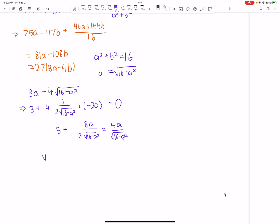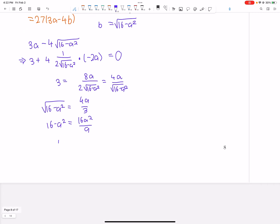So therefore we have square root of 16 minus a squared equals 4a over 3. We square both sides. We get 16 minus a squared equals 16a squared by 9. And therefore we have 16 equals 25a squared by 9. 4 is 5 thirds a. So a is 3 fifths times 4. That's 12 fifths.